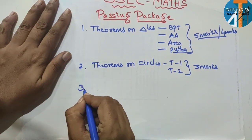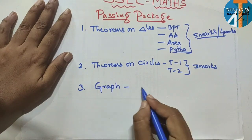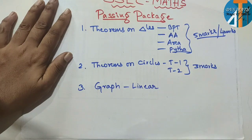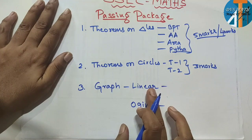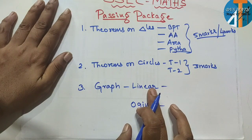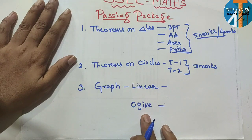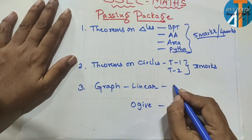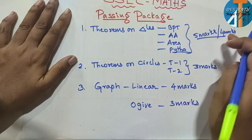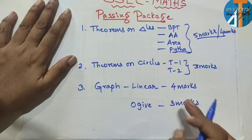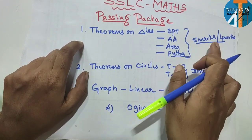Next is graph. Graph question. Graph is 2 types: linear graph and OG graph. Linear and OG — this is the individual's linear graph, as I told you in the previous video. You have to know how easy it is to solve the graph. This is easy to use 4 marks. For OG, we have to make 3 marks. Here we have to make 4 marks, then 4 marks, then 4 marks.